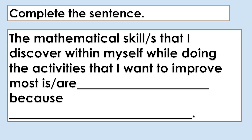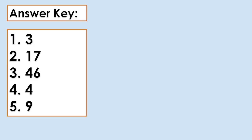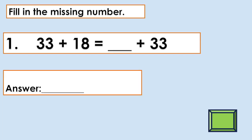Day 4. Complete the sentence. Next, formative assessment: fill in the missing numbers so that the number sentence is correct. The answer is 8. Quiz time — fill in the missing number. You only have 5 seconds to answer. Start now. Time's up. The answer is 18.